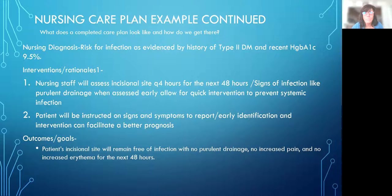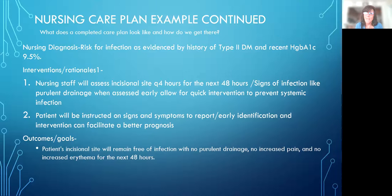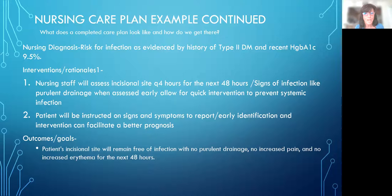You look up interventions and rationales - you can't make this stuff up. Use nurse labs, your textbooks, or credible online sources. For the nursing diagnosis of risk for infection: Intervention 1 - nursing staff will assess the incisional site every 4 hours for the next 48 hours. Rationale: signs of infection with material and drainage, when assessed early, allow for quick intervention to prevent systemic infection. Intervention 2 - patient will be instructed on signs and symptoms to report. Rationale: early identification and intervention facilitates a better prognosis. Outcome: patient's incisional site will remain free from infection with no purulent drainage, no increased pain, and no increased erythema for the next 48 hours.